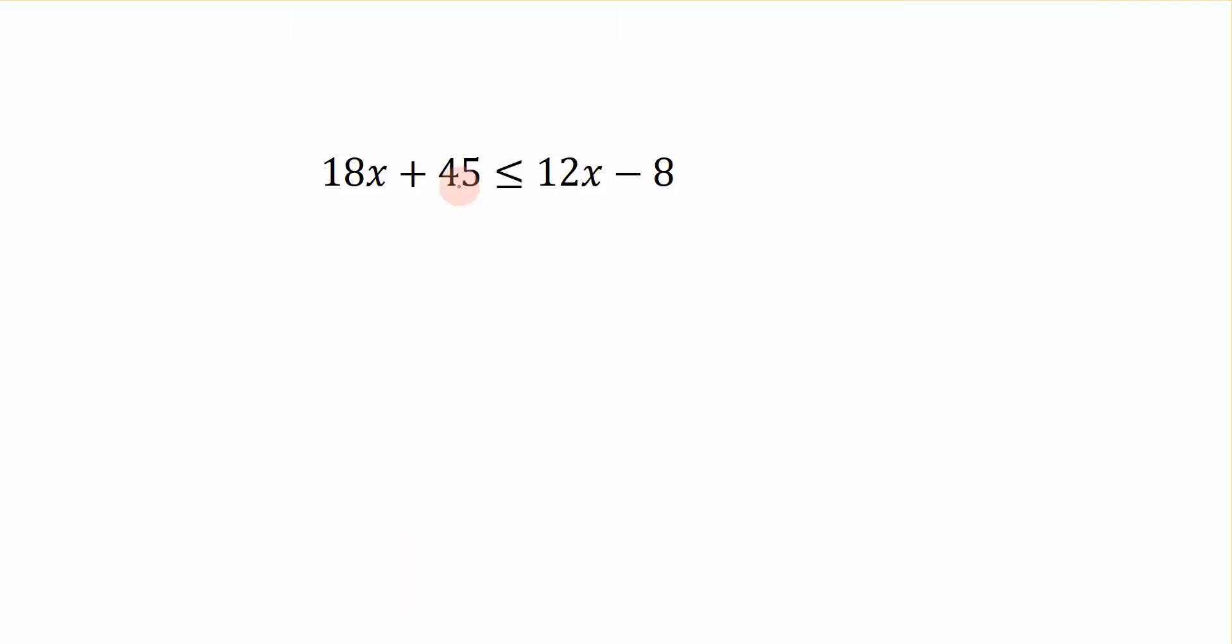And in order to solve that, it's just like regular equations. We want to get all of the variables on the same side and we want the constants on the opposite side. So I'm going to subtract 12x to the left hand side over here and I get 6x plus 45 is less than or equal to negative 8. Now let's subtract 45 to the right hand side and we have 6x is less than negative 53.